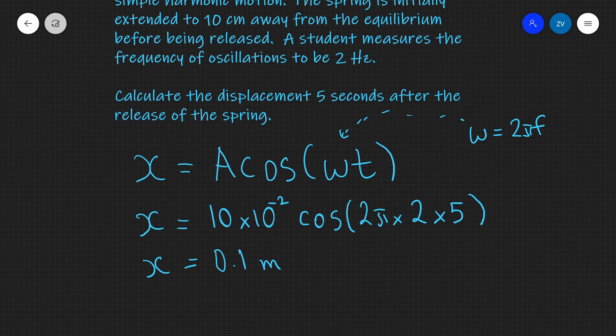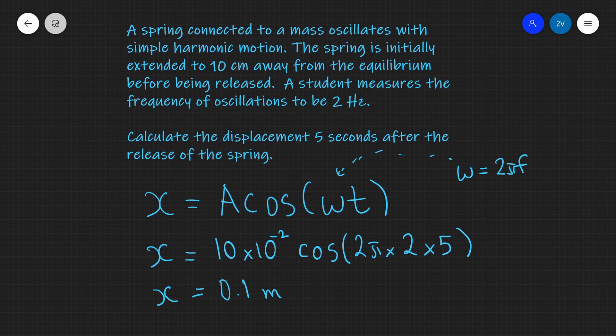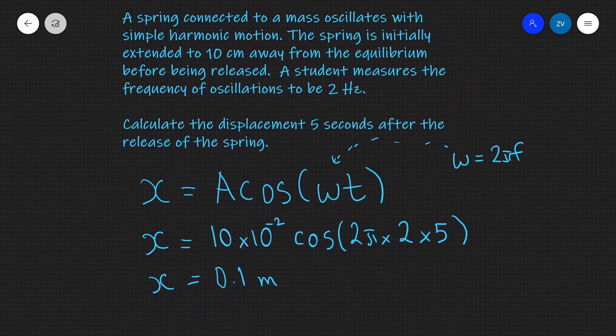So actually, five seconds after the release of the spring, the spring will be back at its amplitude. Hopefully that makes sense. Just to summarize, we've chosen the cosine equation because we're starting at our amplitude, we've made sure that our calculator is in radians mode, we've substituted into the equation, and we have gotten the correct answer.